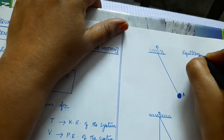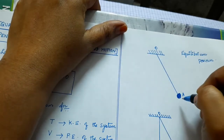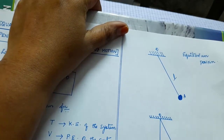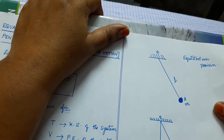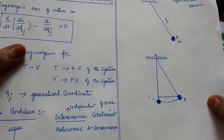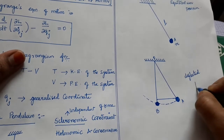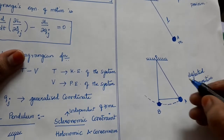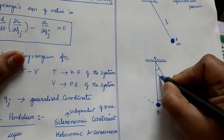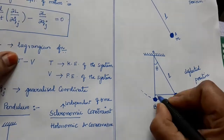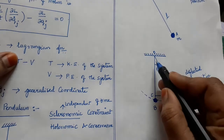This is how the simple pendulum looks in its equilibrium position. It is fixed at O. The length of the string is L, and the mass of the bob is M. The pendulum is allowed to oscillate from position A to deflected position B. The angle between the equilibrium position A and the deflected position B is theta. I have drawn a perpendicular from A to the line OB and marked it as C, forming a right-angled triangle.